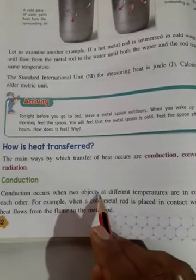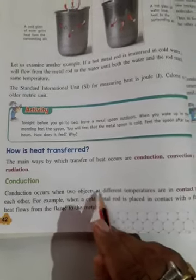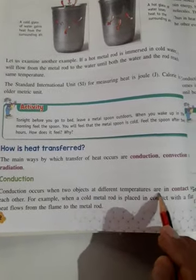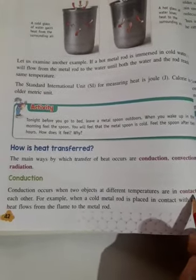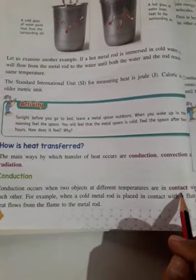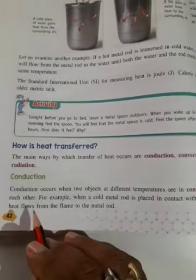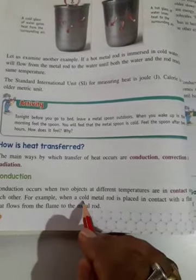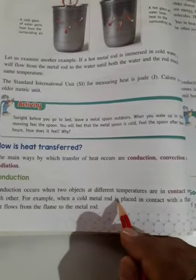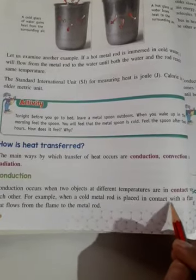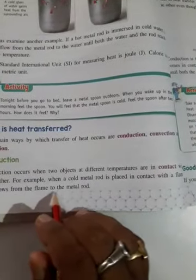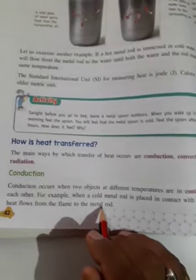Conduction occurs when two objects at different temperatures are in contact with each other. For example, when a cold metal rod is placed in contact with a flame, heat flows from the flame to the metal rod.